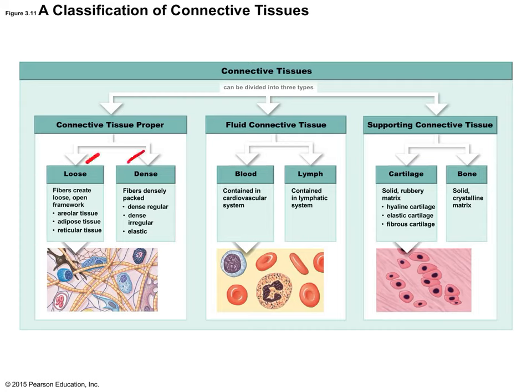Loose refers to the fact that they are very delicate — if you had some loose connective tissue in your hand you could pull it apart and damage it rather easily. Dense connective tissue is more like duct tape: very tough and hard to manipulate, damage, stretch, or break. Fluid connective tissue includes blood — we're not going to talk about lymph. Cartilage and bone are both considered connective tissues.